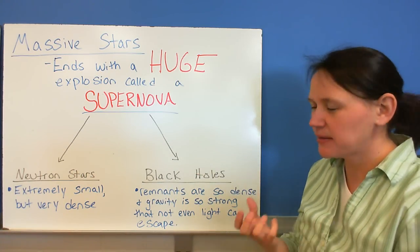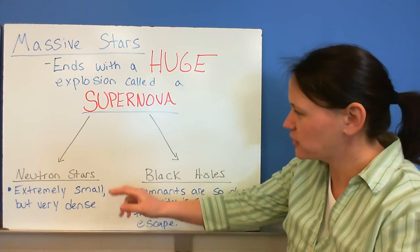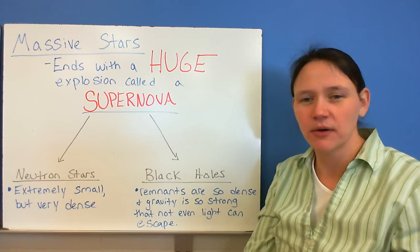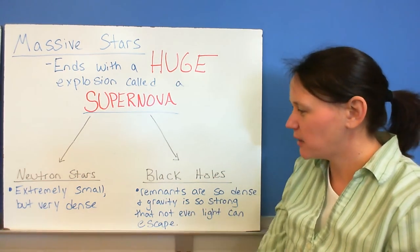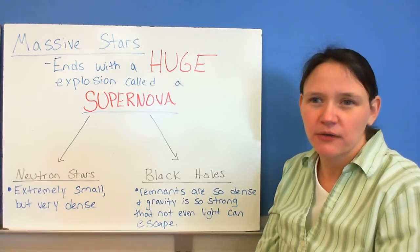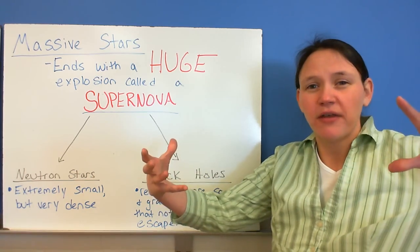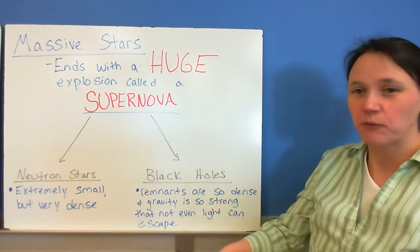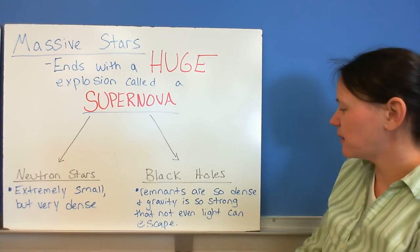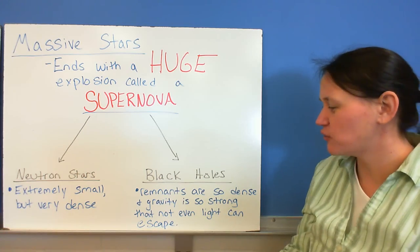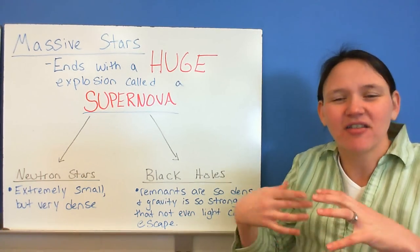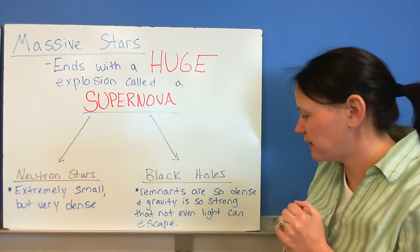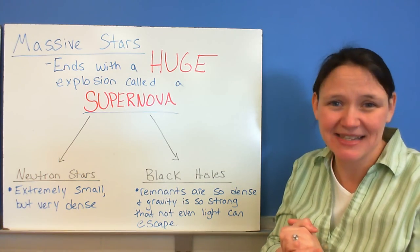And the remnants of that can be in two different forms. You can have a neutron star, which is something that's even more dense than a white dwarf. And it's also going to be extremely small, because there's so much stuff to start with, that that collapse was much more extreme. And a black hole is just one step further beyond that. The remnants are so dense, and gravity is so strong around that material, that light that comes near it can't even escape. It just gets pulled right in, and it's gone. We can't see anything around it.